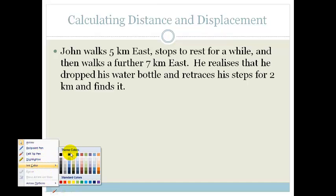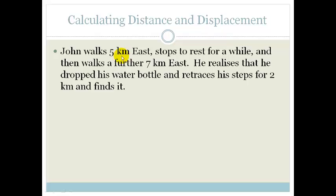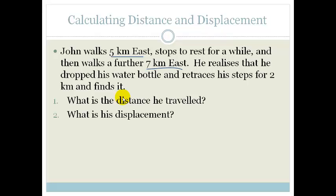It says here that John walks 5 kilometers east, stops to rest for a while, and then walks a further 7 kilometers east. He realizes that he dropped his water bottle and retraces his steps for 2 kilometers and finds it. The first question they ask is, what is the distance he traveled? And the next thing they ask is, what is his displacement?